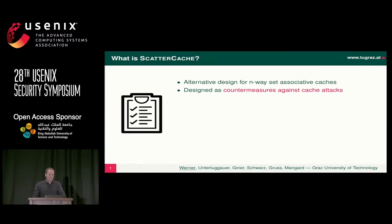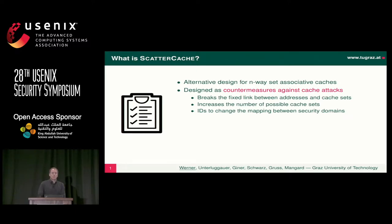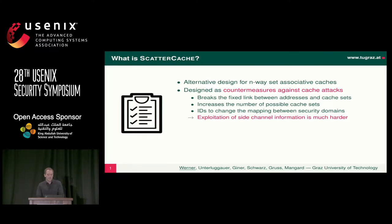What is Scatter Cache? Scatter Cache is basically an alternative cache design. It's also an associative cache, but we designed it as a countermeasure against cache attacks. It breaks the fixed link between addresses and cache sets that we usually have in an associative cache. We increase the number of possible cache sets and introduce domain IDs which allow us via software to change the concurrences in the cache. As a result, exploitation of the cache in terms of attacks — getting information out of the side channels — should get much harder.